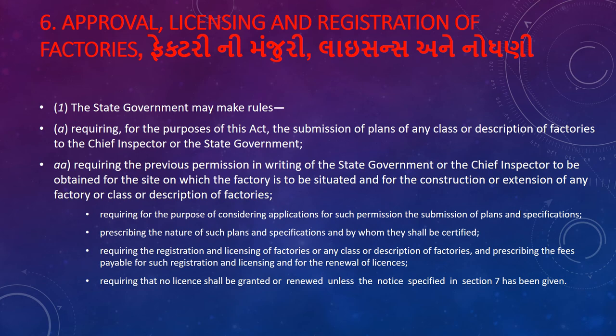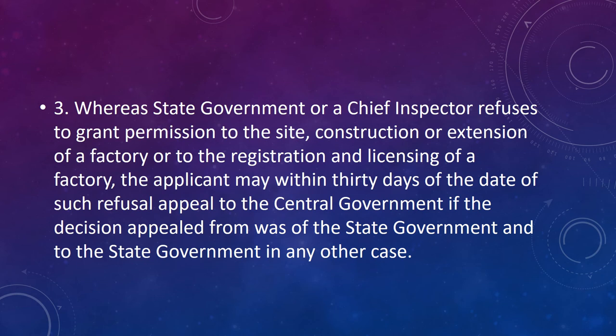If you cannot get a license from a factory, or if you have a license, you cannot operate without paying the required fee. The license is granted after maintenance of the factory is confirmed by the chief inspector. The state government or chief inspector may refuse to grant permission for the site, construction, or extension of factories.